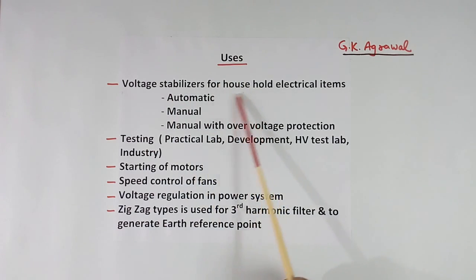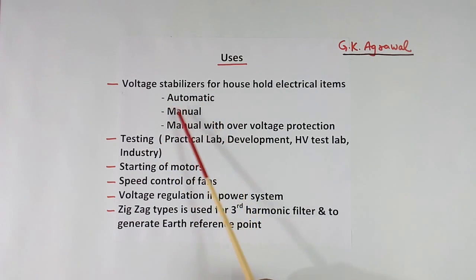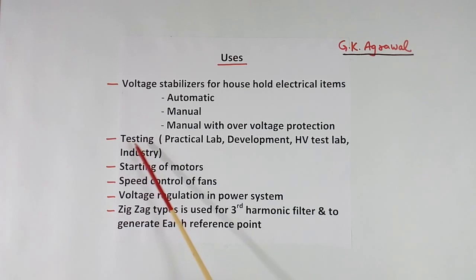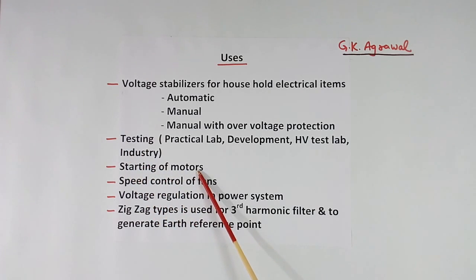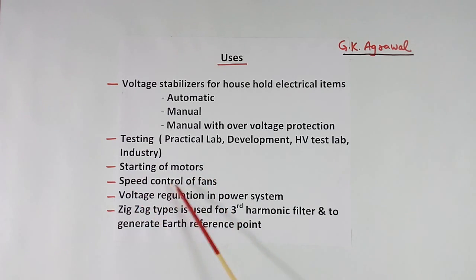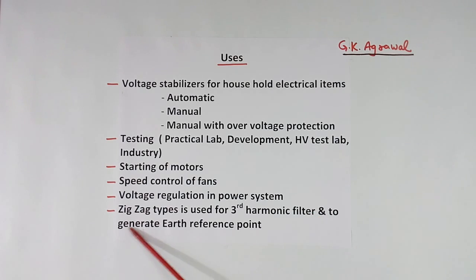Usage: in the house we have many electrical items that require a voltage stabilizer — there are 3 types: automatic, manual, and manual with over voltage protection (as I just showed with the auto cutoff in my stabilizer). Also used in testing labs — practical, development, and HV test labs — and in industry for product testing. Also used for starting motors to reduce starting current, for speed control of fans, and in power systems for voltage regulation.